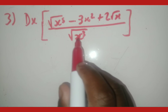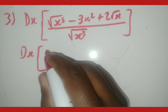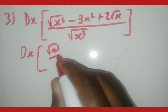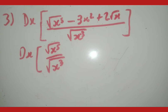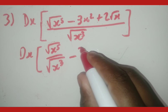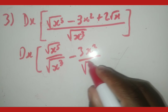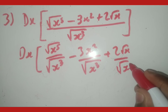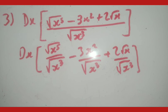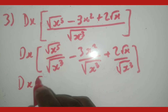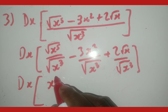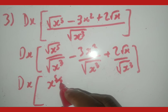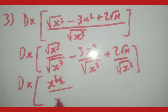Let's split since we've got one denominator. So we get: square root of x to the 5th over square root of x cubed, minus 3x squared over square root of x cubed, plus 2 root x over square root of x cubed, all times dx. Now we convert to exponential fractions: what is inside goes on top, and the invisible 2 outside goes to the denominator. The denominator becomes x to the power of 3 over 2.